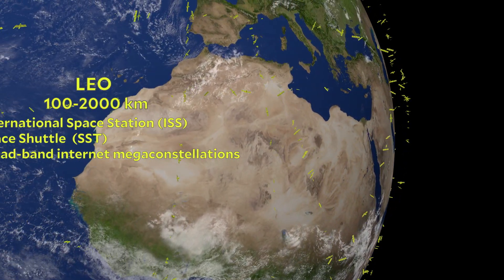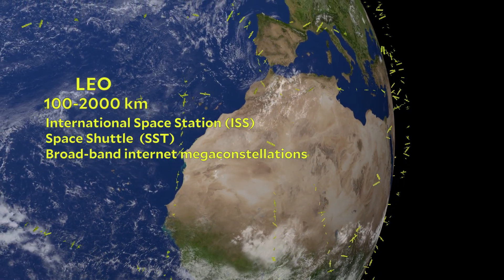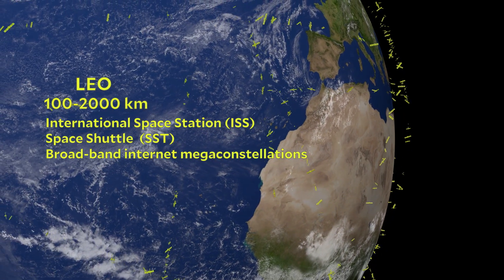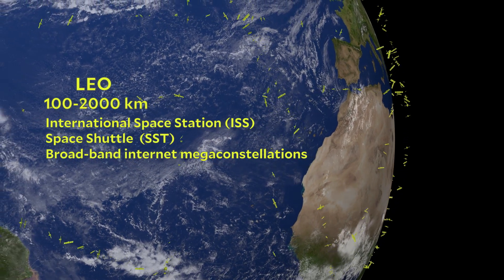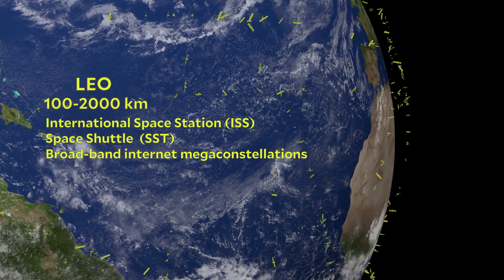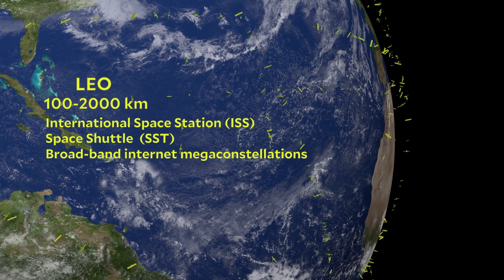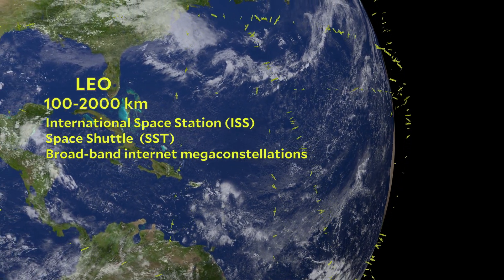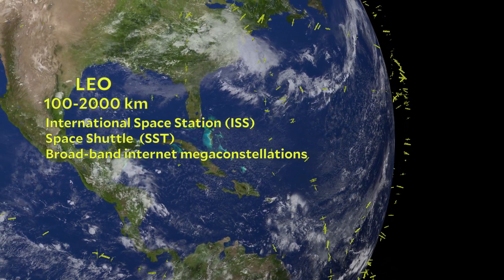The International Space Station is in low Earth orbit, LEO. All the space shuttle missions — LEO. You may have also heard of these mega constellations being launched to provide broadband satellite internet, things like Starlink or OneWeb — these are all in LEO. And we will focus more on LEO, low Earth orbit, in the next few segments.